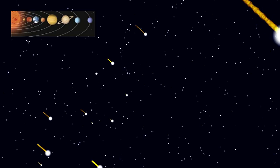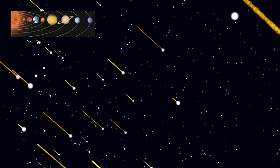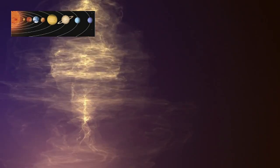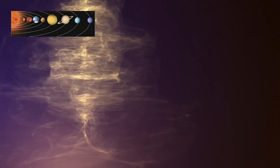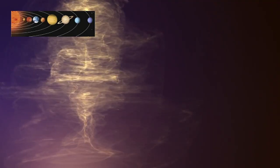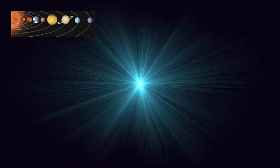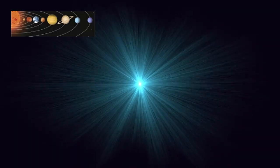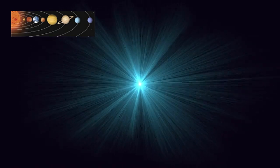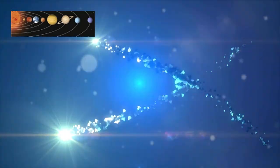The tails are where the story gets truly dramatic. Dust tails, broad and golden, curve gently along a comet's path. They're made of microscopic grains pushed away by sunlight, scattering light back to Earth like cosmic fog. Ion tails, on the other hand, are thin, straight, and vividly blue, formed when solar ultraviolet light rips electrons from gas molecules and the solar wind sweeps them outward like a cosmic blade. These two tails tell two very different stories: one about the warmth of sunlight, the other about the invisible power of space weather. But these elegant forms don't always survive.